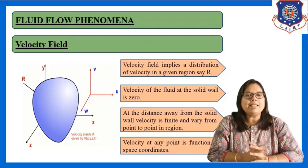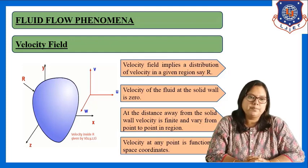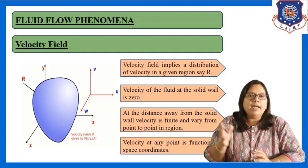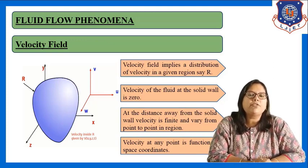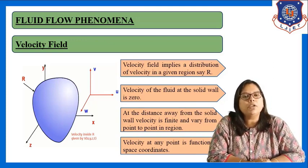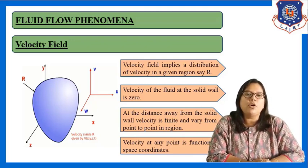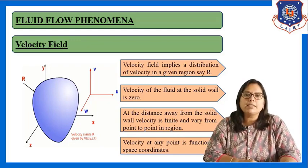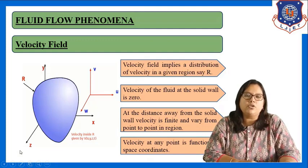Velocity is a function of space coordinate. At a distance away from the solid wall, velocity is finite and varies from point to point in a particular region. Velocity at any point is a function of space coordinate, so in region R, the velocity is a function of coordinates x, y, and z.